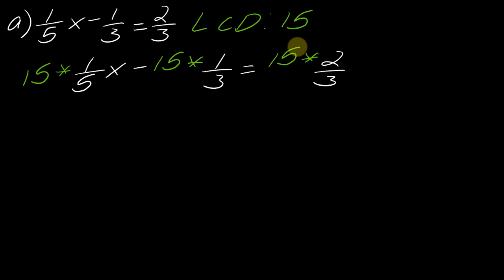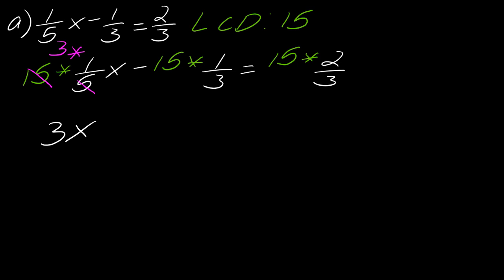Now we're going to go piece by piece to figure out how this will cancel out, because the whole point of this is that the denominator should drop out. Five goes into fifteen three times, and then three times one x gives me just 3x. Now the minus sign comes next: three goes into fifteen five times, and five times one is just five, so this is going to be 3x minus 5.